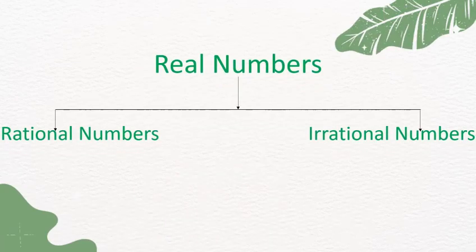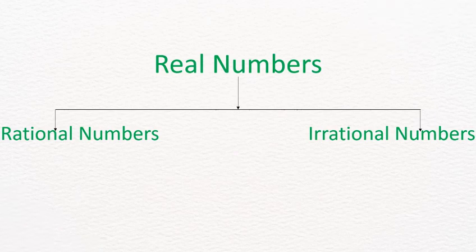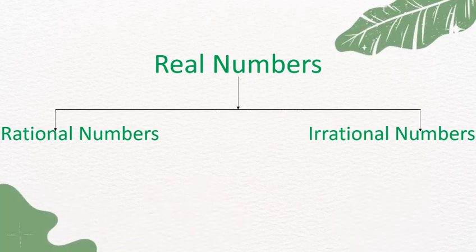Real Numbers are divided into two groups: one is Rational Numbers, and the second one is Irrational Numbers.